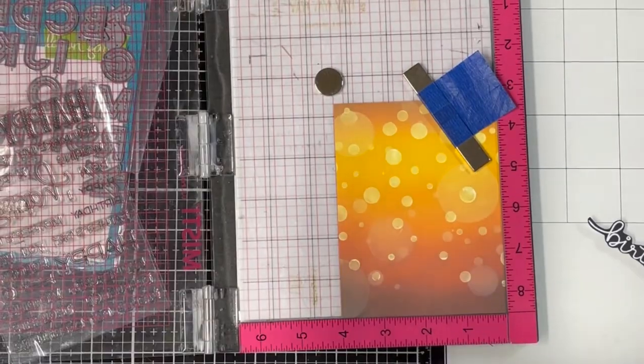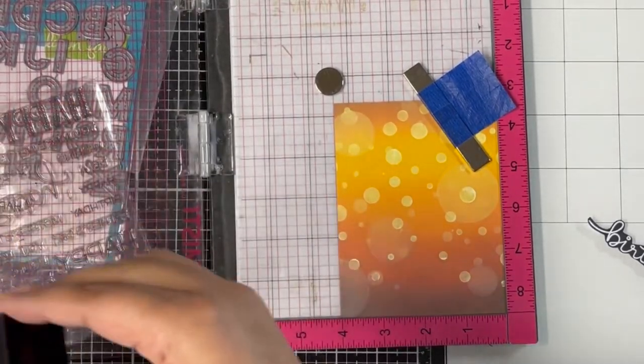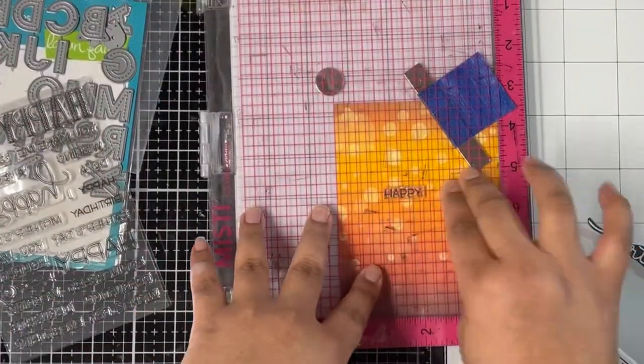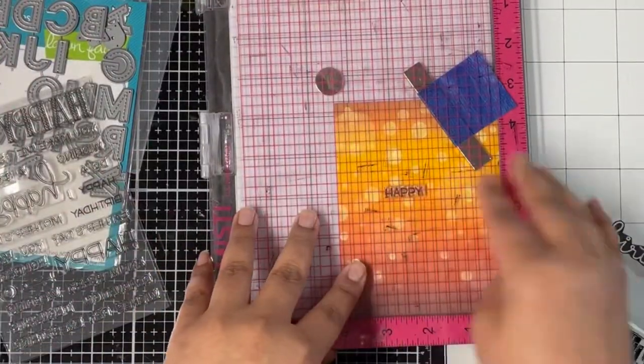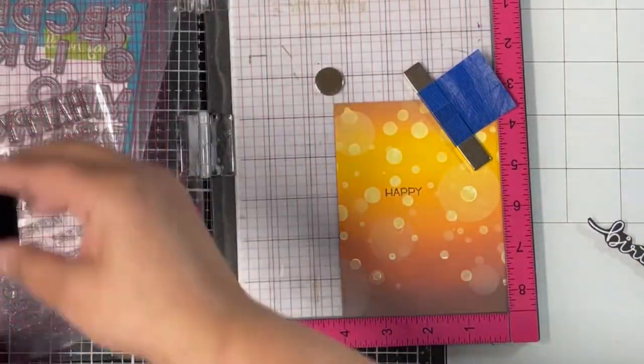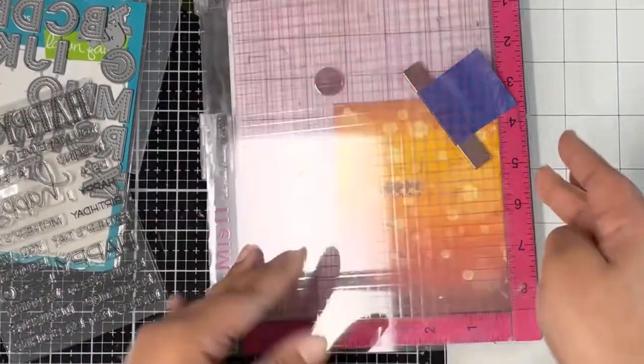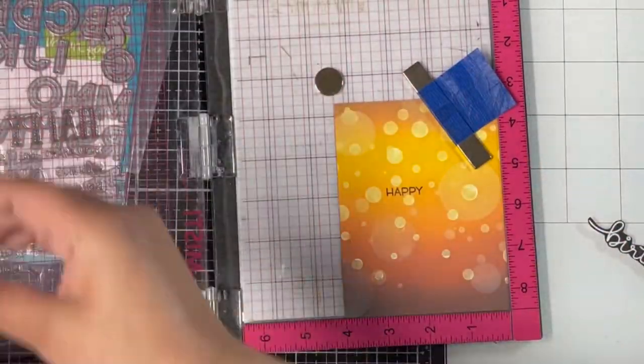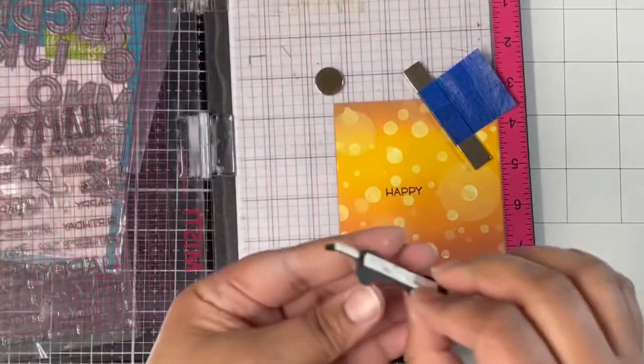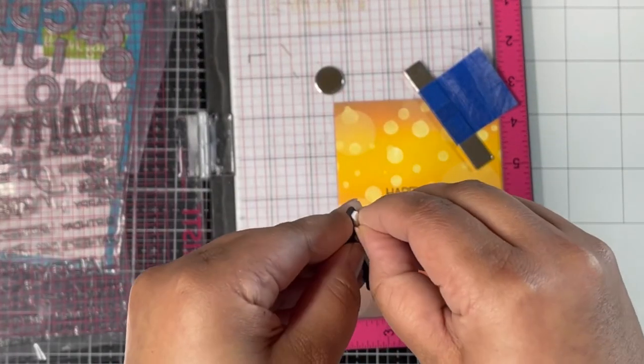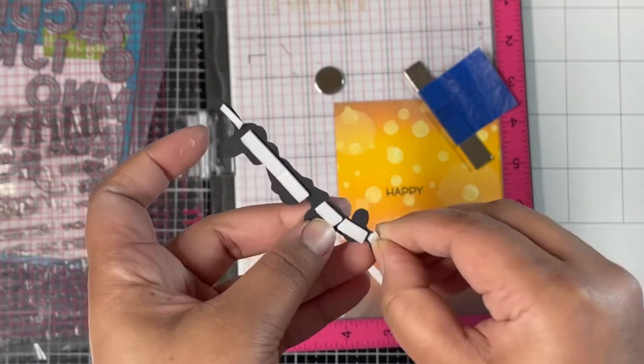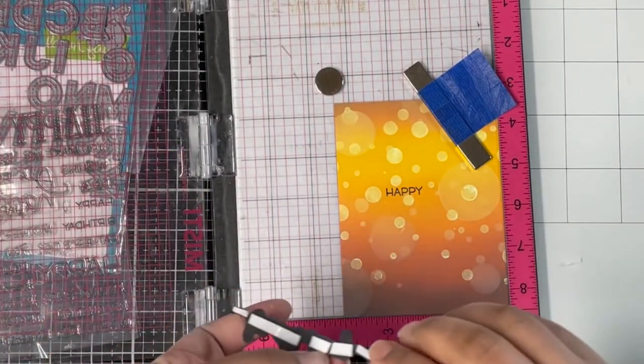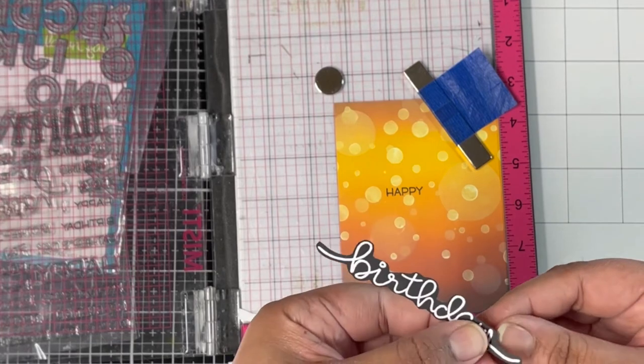For my next card, I'm stamping the sentiment Happy directly to the background panel using Lawn Fawn Jet Black ink. I'll stamp the sentiment a few times to get a crisp image—the sentiment is from the Happy Happy Happy stamp set. Next, I'll glue the scripty birthday sentiment that I fussy cut off camera, placing it just below the Happy sentiment, a little off-center toward the right, leaving space on the left to glue down a few birds.